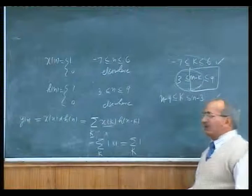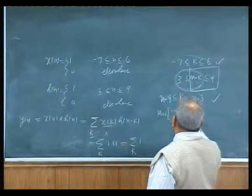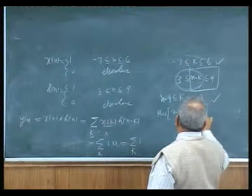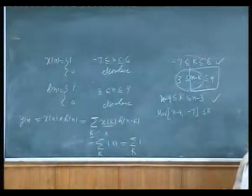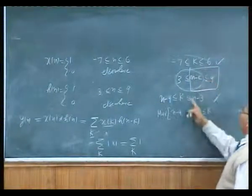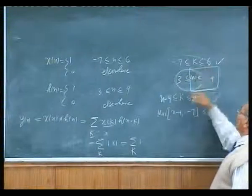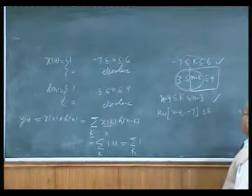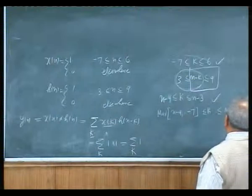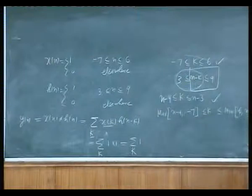So what is the solution for k? Naturally, k has to be greater than the maximum of n minus 9 and minus 7 — whichever is the maximum, k has to be greater than or equal to this. Likewise, k has to be less than or equal to 6, and k has to be less than n minus 3. That means k can assume at most a value of 6, or at most a value of n minus 3. So k has to be less than the minimum of 6 and n minus 3.